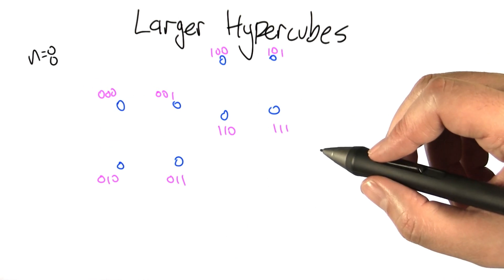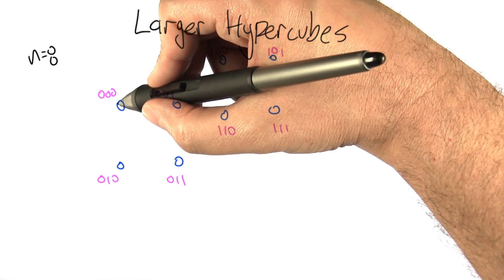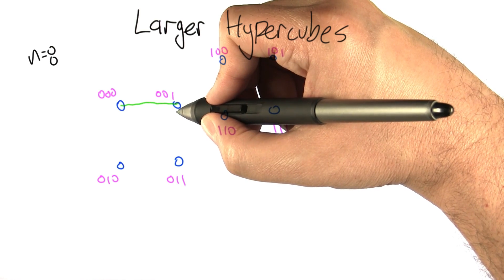Here's a hypercube on 8 nodes. We number the nodes from 0 to 7 in their binary bit patterns. Then we connect two nodes if they differ in exactly one bit place.